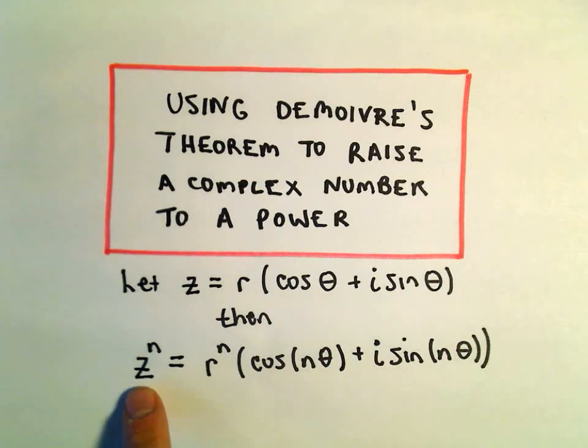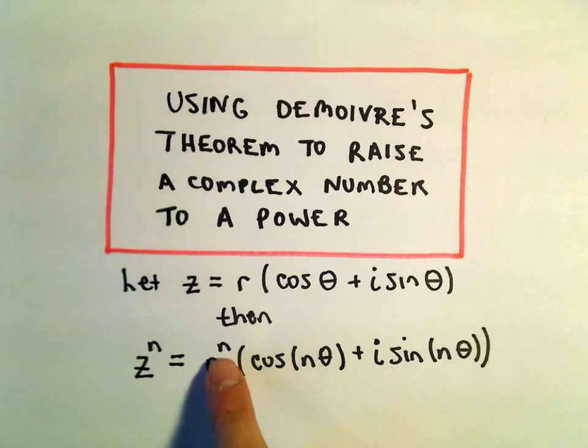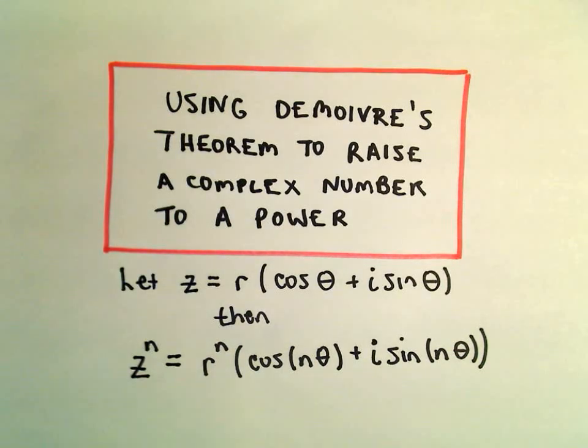it says if you take your complex number and raise it to a power, we just take r and raise it to that power of n. And then our angles theta, we simply multiply that by n.